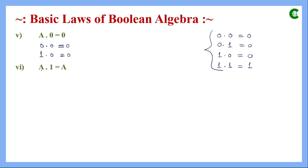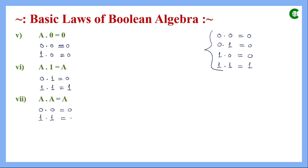The next AND law is a dot 1 equals a. If a is 0, then 0 AND 1=0. If a is 1, then 1 AND 1=1. So when a is 0 the result is 0, and when a is 1 the result is 1 — the value of a is replicated in the result. The third AND law is a dot a equals a. If a is 0 then 0 AND 0=0, and if a is 1 then 1 AND 1=1.